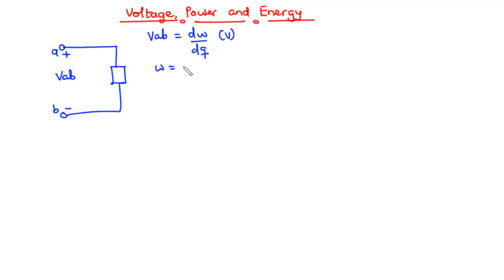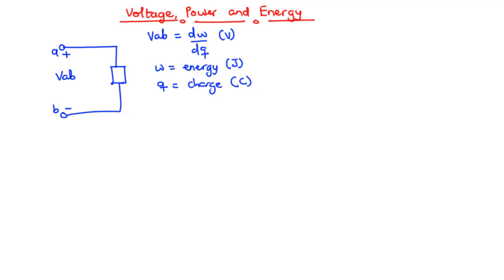Here, W is the energy in joules and Q is the charge in coulombs. In simple terms, we can define the voltage or potential difference as the energy required to move a unit charge through an element, and it is basically measured in volts.